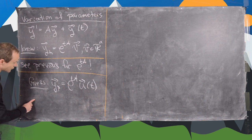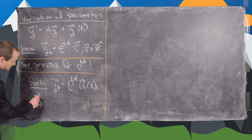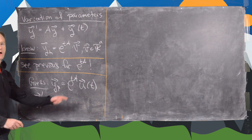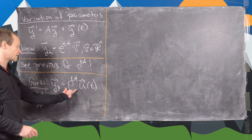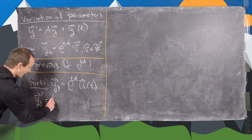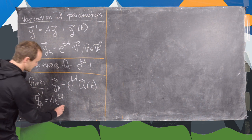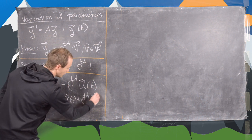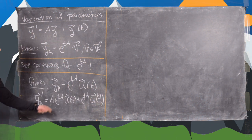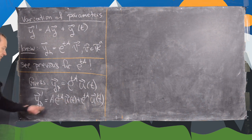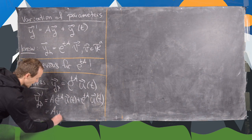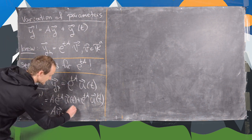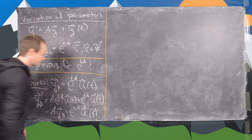We can take the derivative here, so y_p prime, using the product rule. The derivative of the matrix exponential brings down A, which is easy to see with the Taylor expansion formula, giving us A e^(tA) times u of t plus e^(tA) times u prime of t. Notice this first term is exactly equal to A times the particular solution, plus e^(tA) times u prime of t.